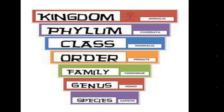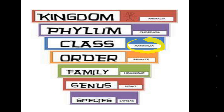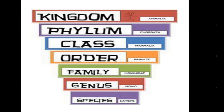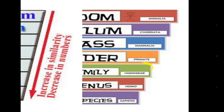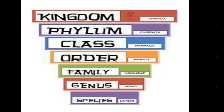Now let's look at the classification of humans. Their Kingdom is Animalia. Phylum is Chordata — chordata means they have a vertebral column. Class is Mammalia, because they feed on their mother's milk at the young stage. Order is Primates, because they can grip with their hands.